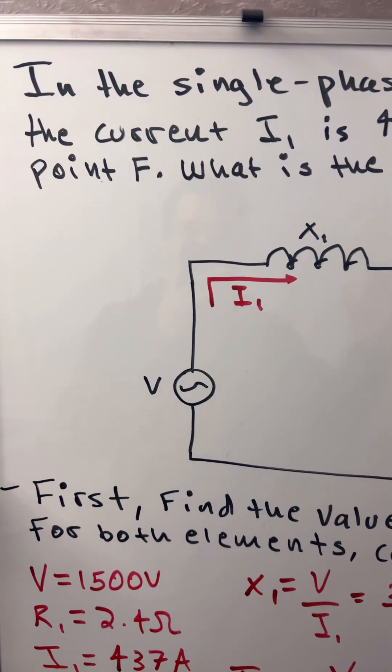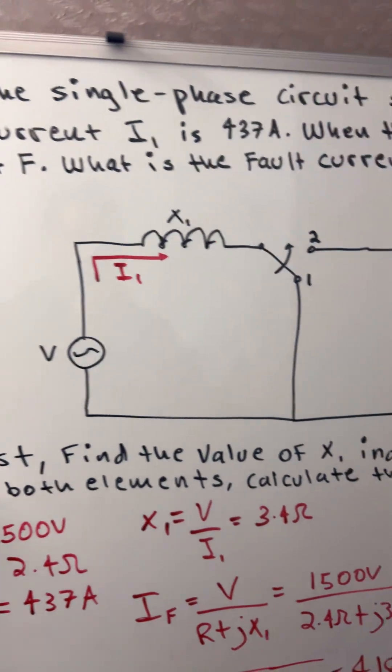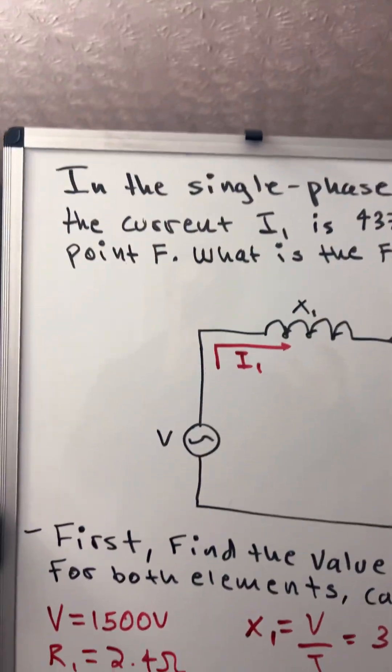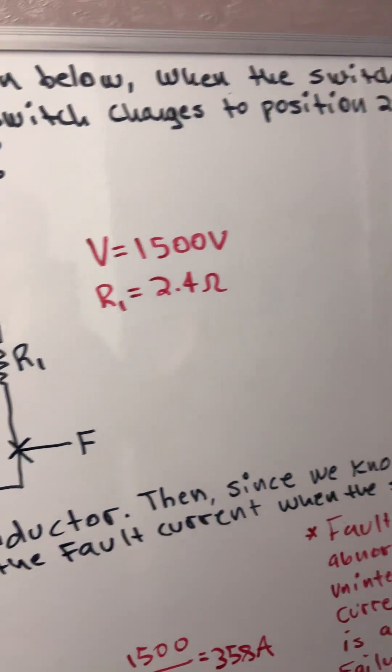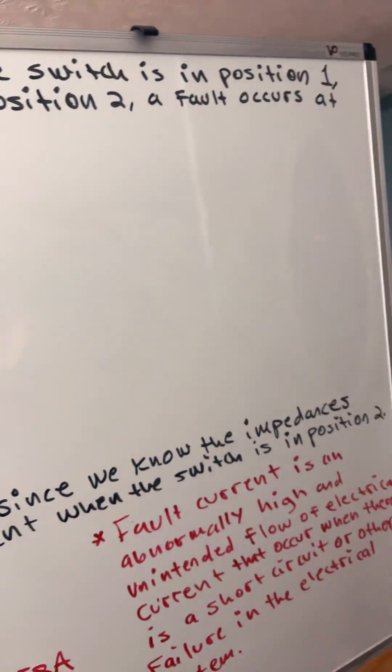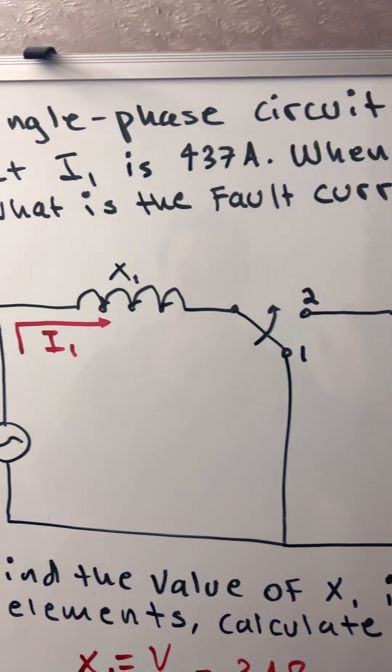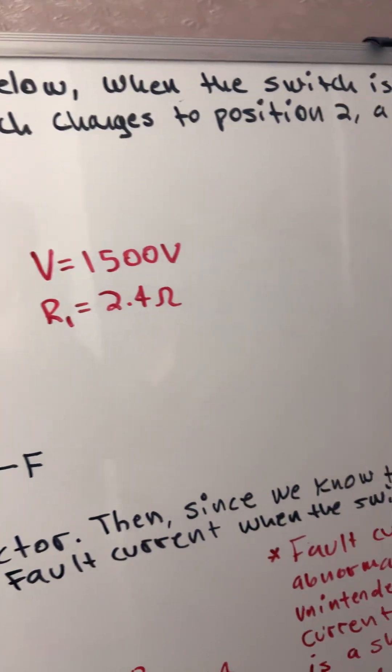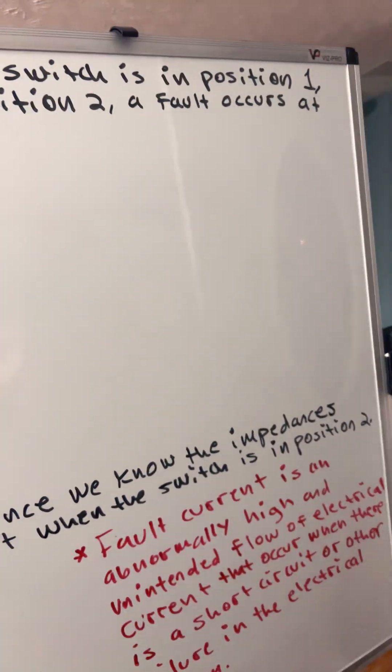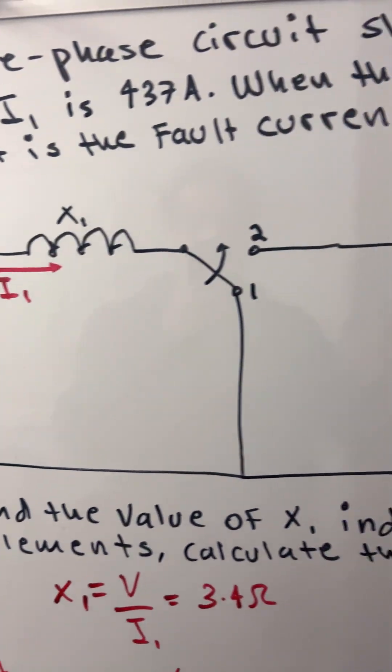Hello everyone, today I'm going to show you how to find the fault current on a circuit. The problem states: in the single phase circuit shown below, when the switch is in position 1, the current I1 is 437 amps. When the switch changes to position 2, a fault occurs at point F. What is the fault current?